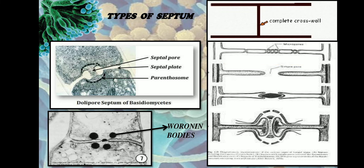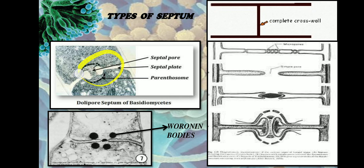There is also something called a dolipore septum. In a dolipore septum, the fungal septa forms a barrel-shaped swelling around the central pore of the septum. Dolipore septa are usually seen in the Basidiomycetes family.